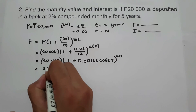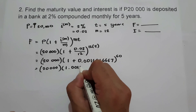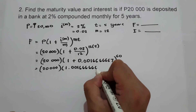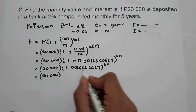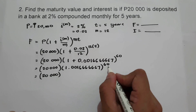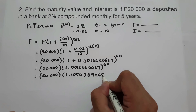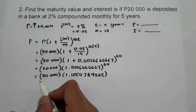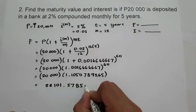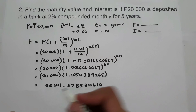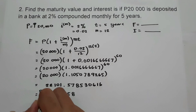Continuing the simplification, we have 20,000 times 1.00166666667 raised to 60. Raising that number to the 60th power gives 1.1050789265. Multiplying by 20,000 gives 22,101.578530616, or we can write our answer as 22,101.58. This will be our future value.